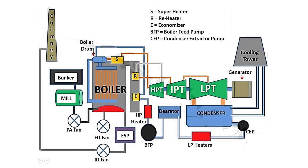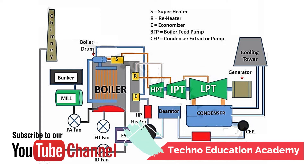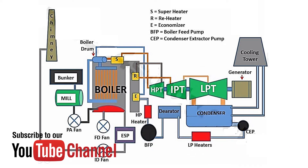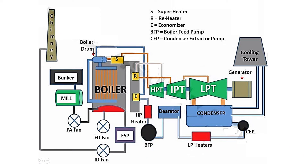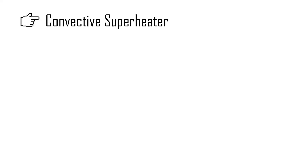Regarding the location of the superheater: superheaters are located in the path of the furnace flue gases so that heat is recovered by the superheater from the hot gases. So it is located where the temperature range is high. There are basically two types of superheater: convective superheater and radiant superheater.